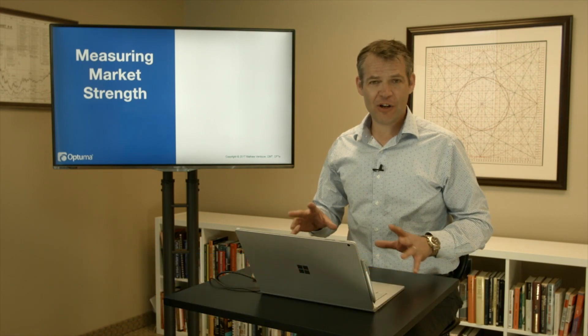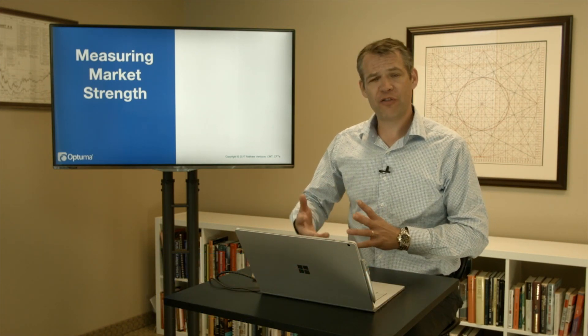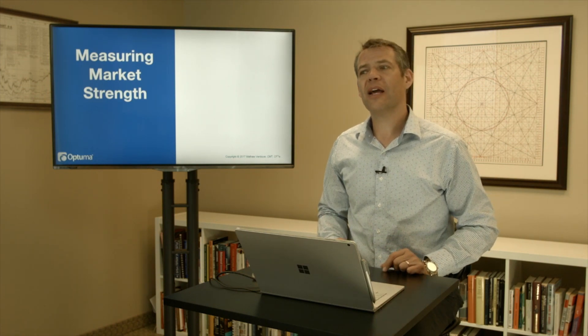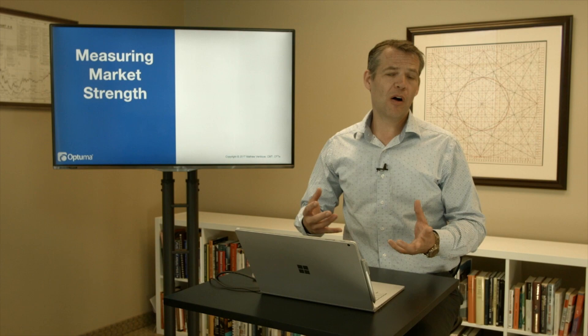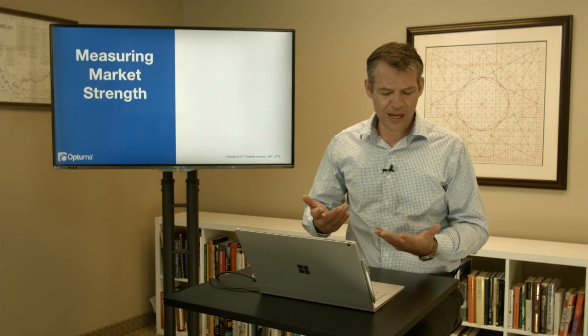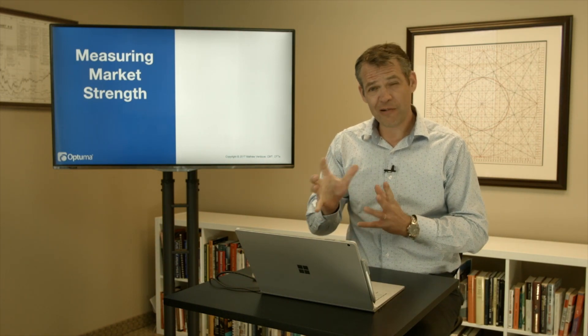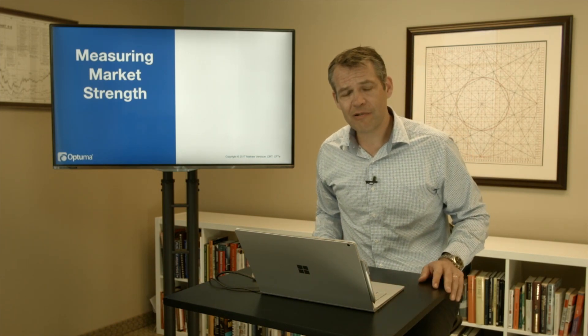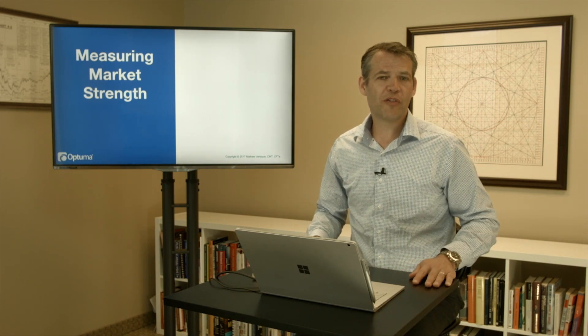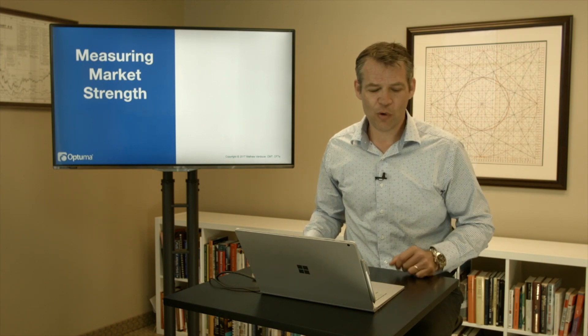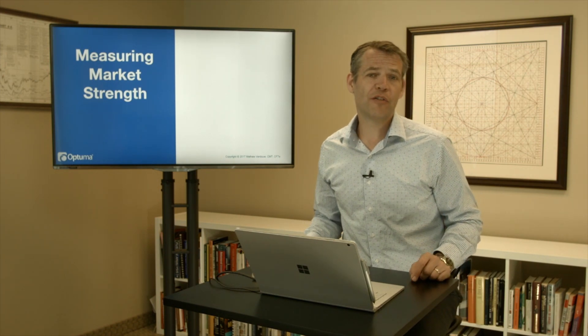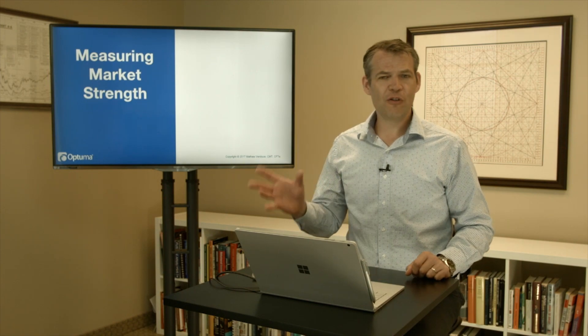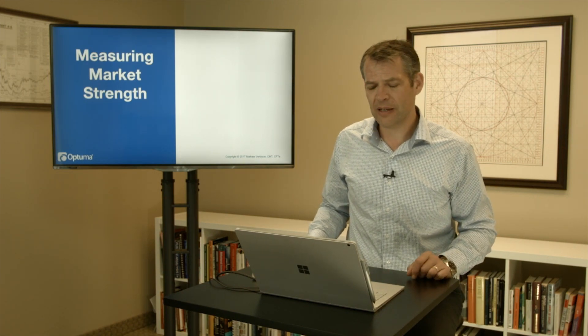Welcome back. This time we're going to talk about market strength, which is more about market breadth and that type of analysis. It's another form of consensus-type indicator, but this time looking at the constituents or members of an index. You could look at the members of the S&P 500 — the 505 shares that make up the S&P 500 right now — or maybe all the shares on the NYSE.